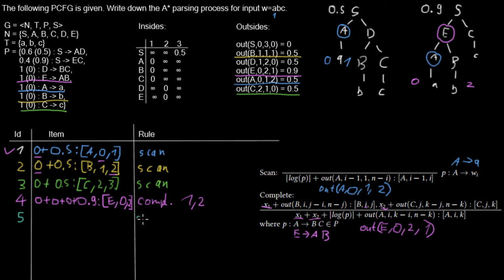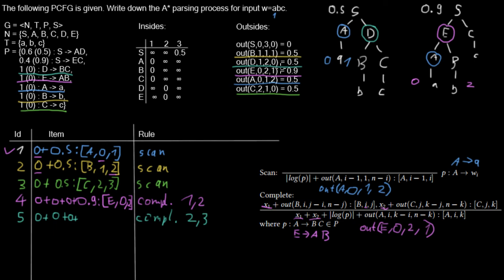Next, using B (line 2) and C (line 3) with the complete rule and rule D expands to BC: I add the first weight of item B (0), the first weight of item C (0), the rule weight (0), and the outside weight for D, which is 0.5. The resulting item is D from 1 to 3, by the complete rule.